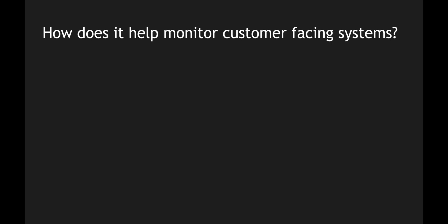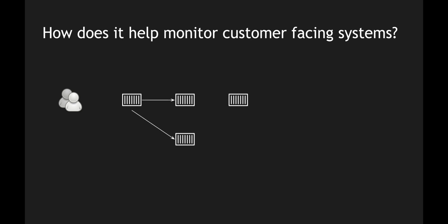Now let's overlay this with real-time examples. I've created a dummy microservices implementation — imagine these boxes are individual services and our client is going to interact with these applications. There will be different network calls between these microservices and there is a database as well. This is a classic example of a distributed system with multiple network calls going through.